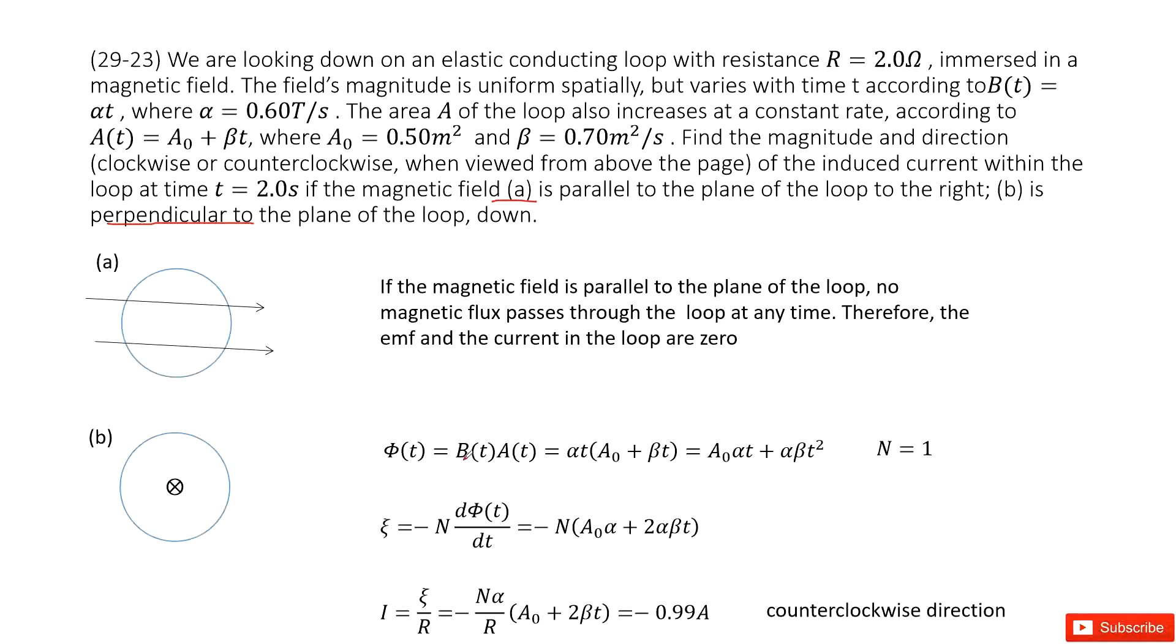And then we can see how the magnetic flux changes in this loop. So we use B times A. And then you can see in this equation, it changes with time. But there, the constant A0, alpha, beta are positive. So that means as time progresses, the phi t will increase. As t increases, magnetic flux will increase.